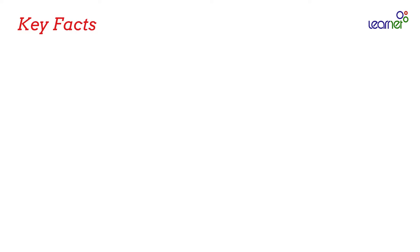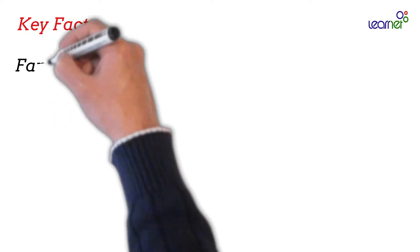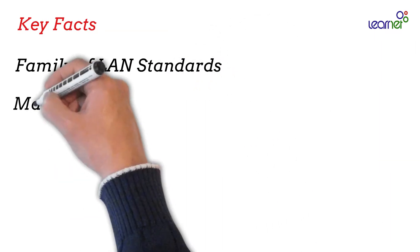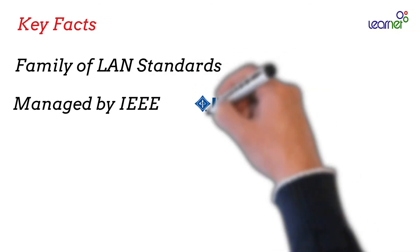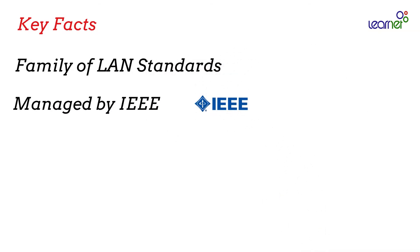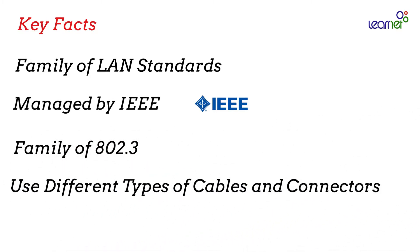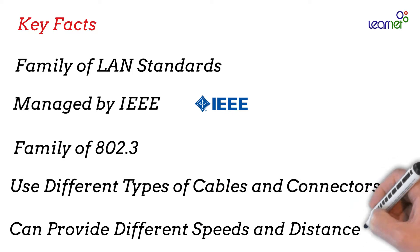Let's review some key facts about Ethernet. First, Ethernet is the name of a family of LAN standards. This family is managed by the Institute of Electrical and Electronics Engineers, or IEEE. IEEE defined a code for this family: 802.3. Each family member, or a group of them, has a code starting with 802.3. There are different types of cables and connectors used in these standards, and depending on the characteristics, they can provide different levels of speeds and distances.